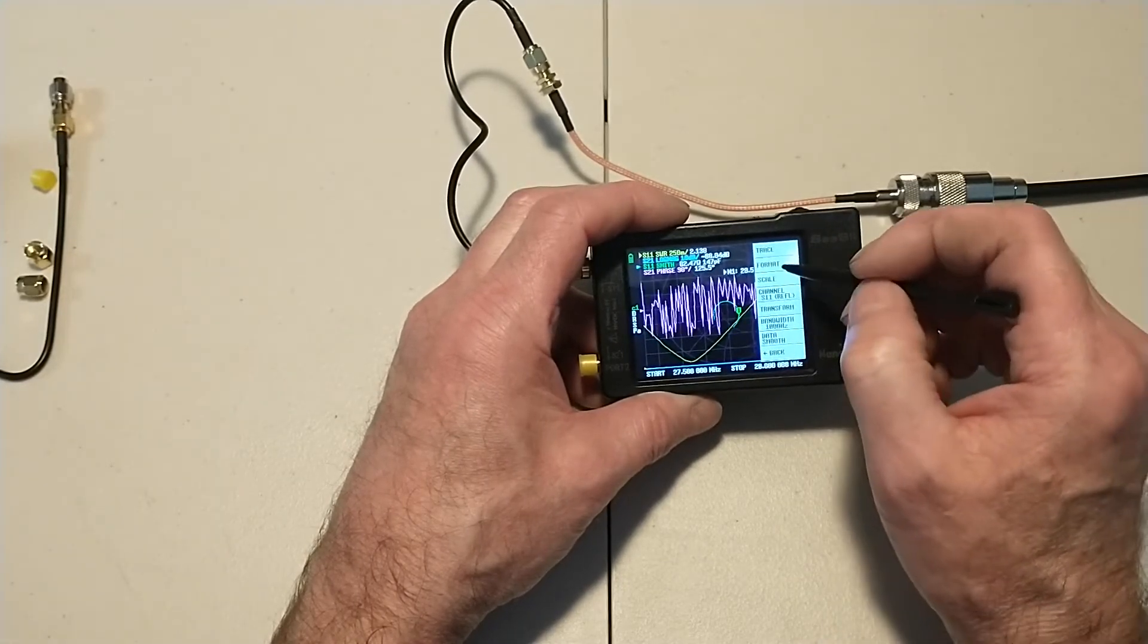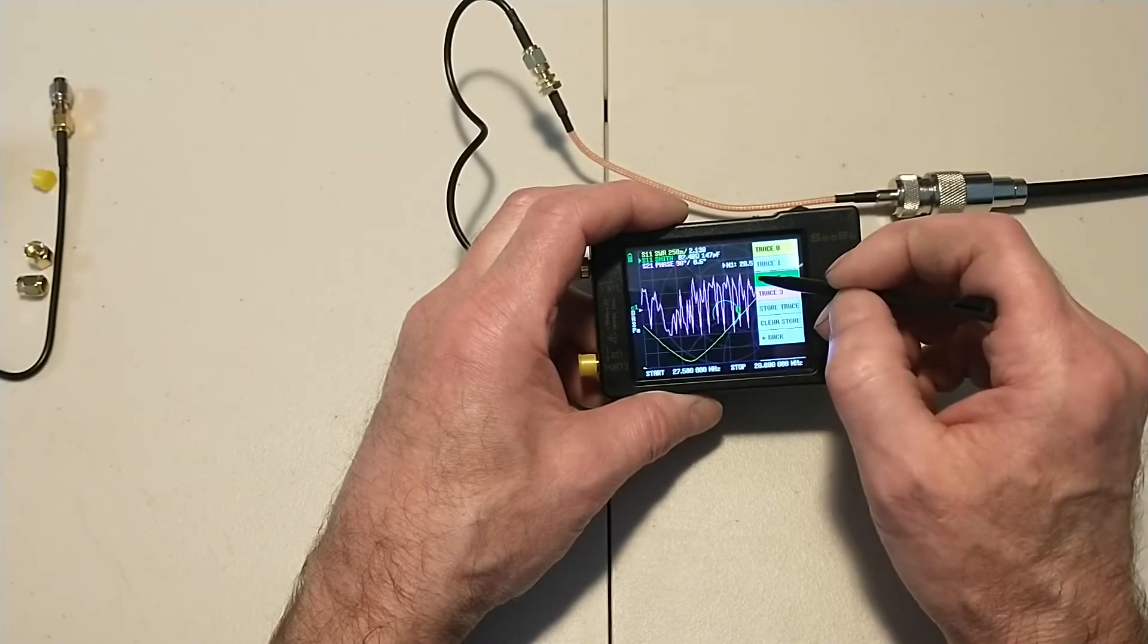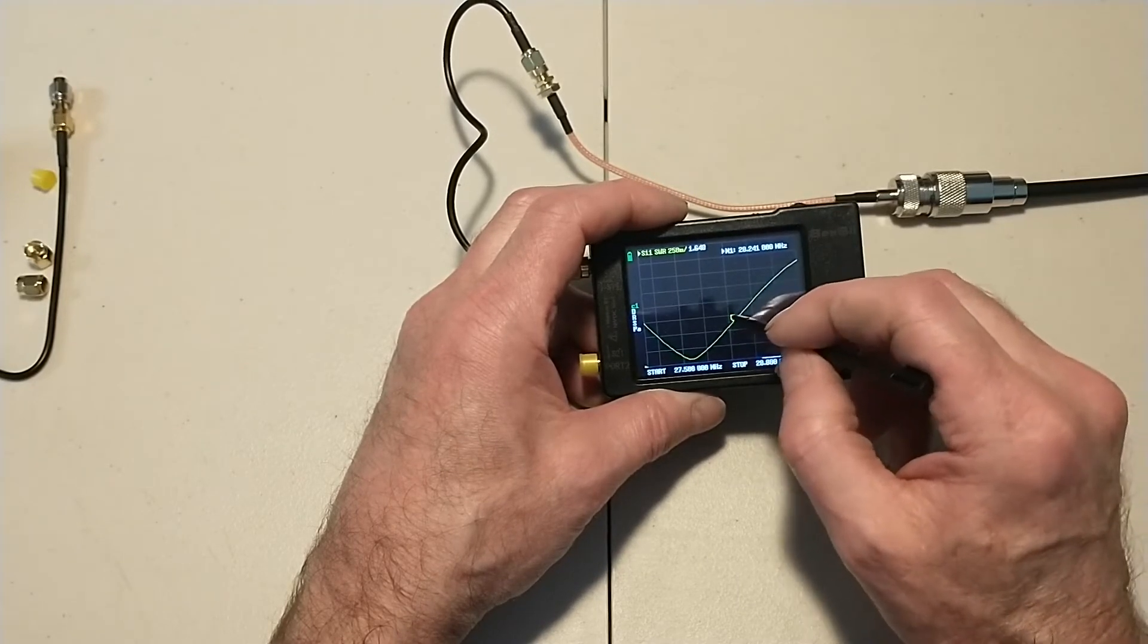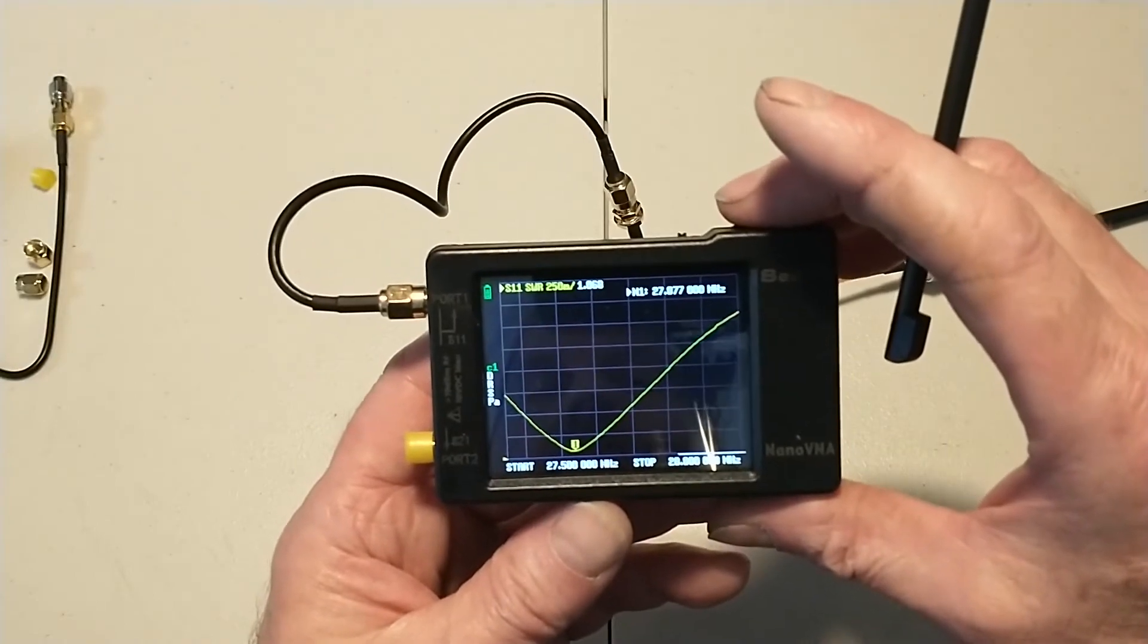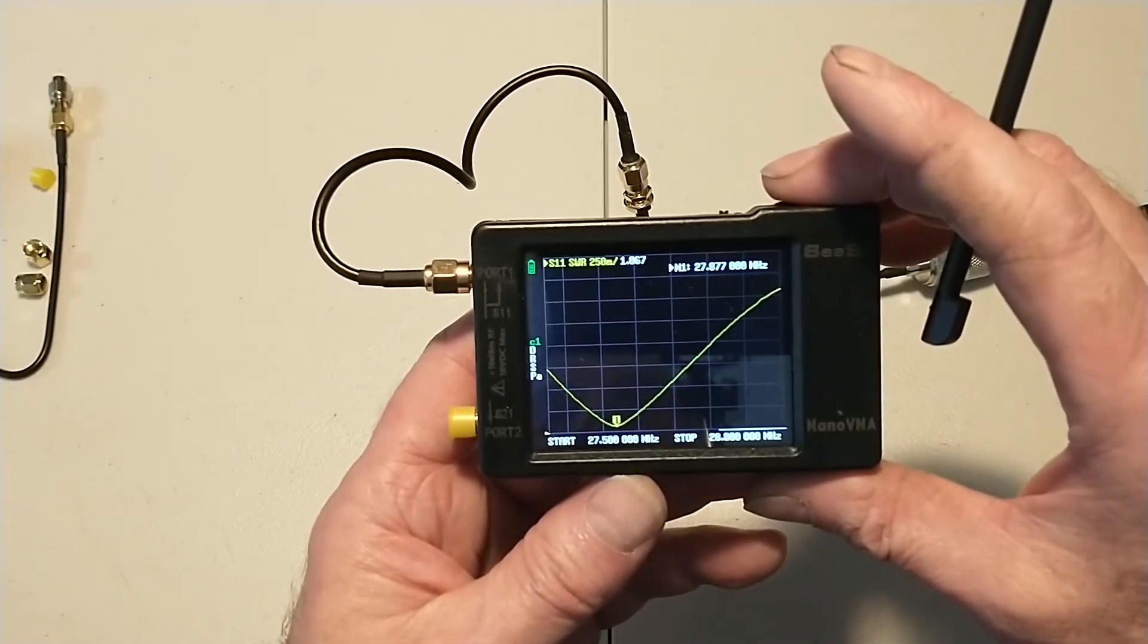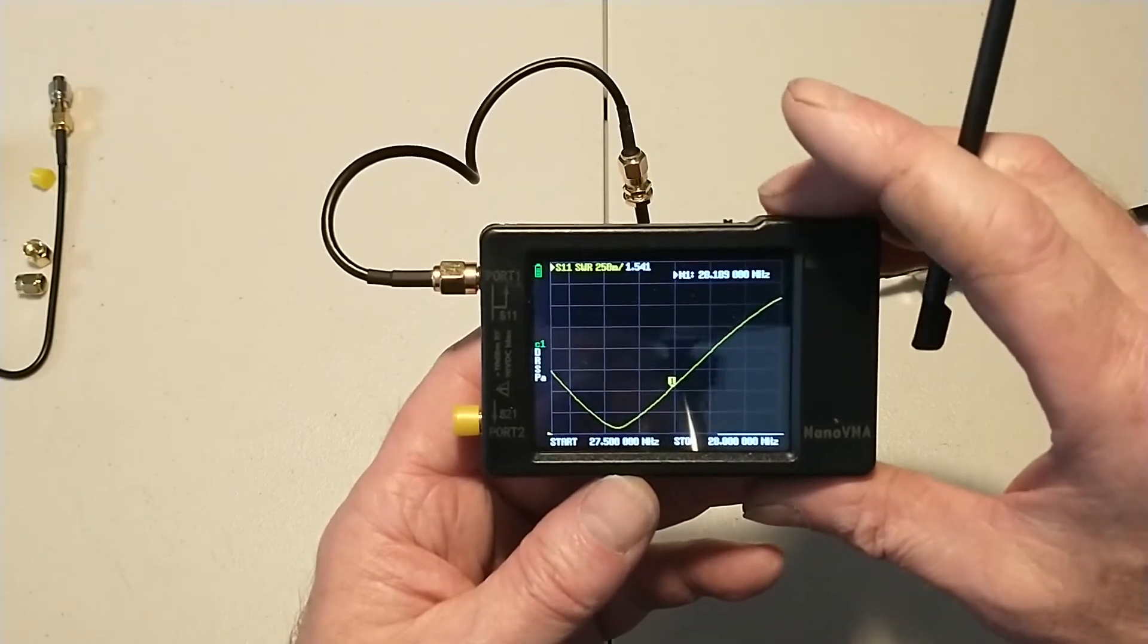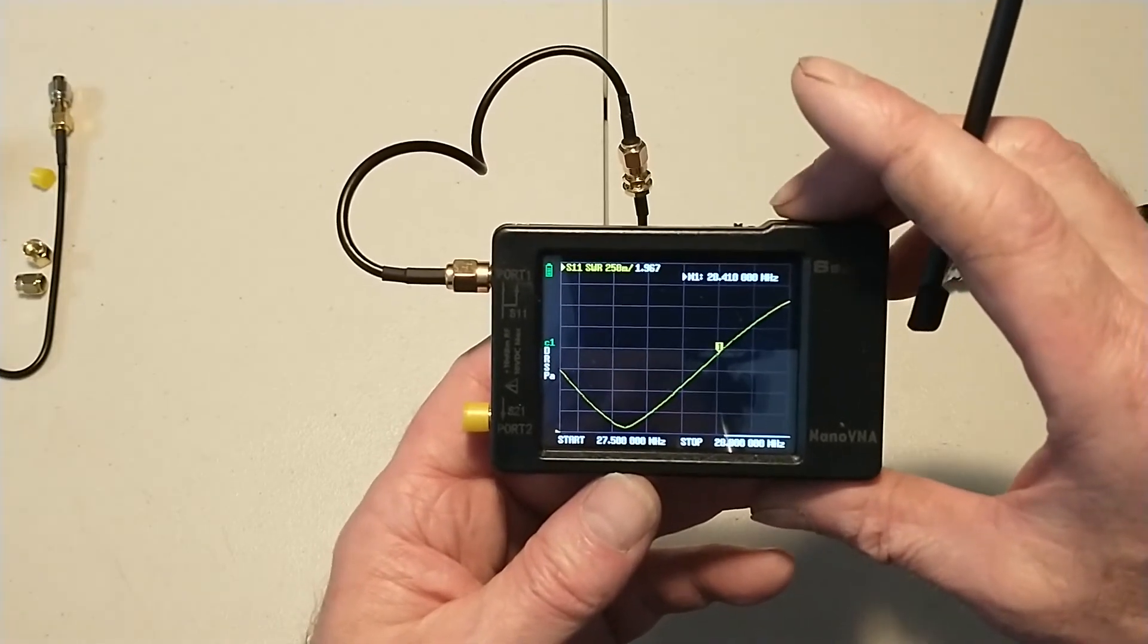And there we go. Let's get rid of some of these traces. So all we need is the yellow one. So we'll turn that one off, turn that one off, turn that one off. Now we just have SWR. And we're 1.06 at 27,877. And I'm going to run it up to the calling frequency real quick. So 10 meter calling frequency is 28,400. And you can see that this antenna is not very broadband. Almost 2 to 1.